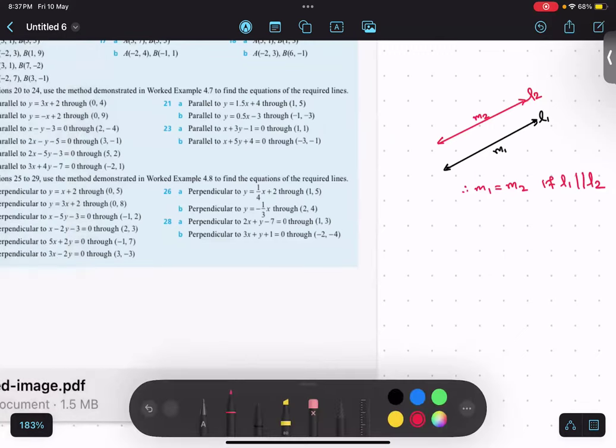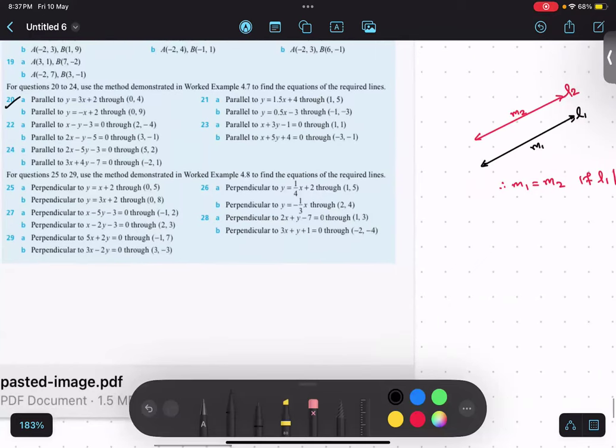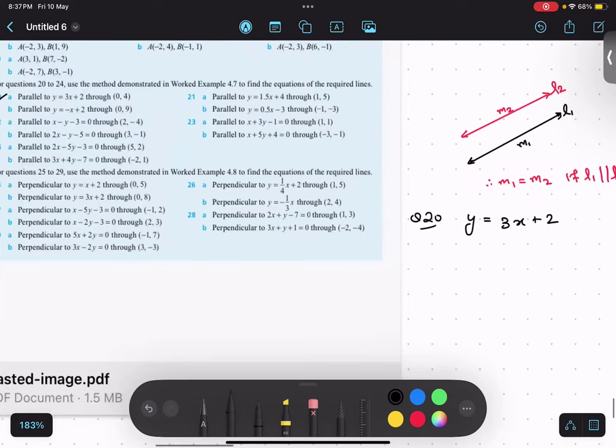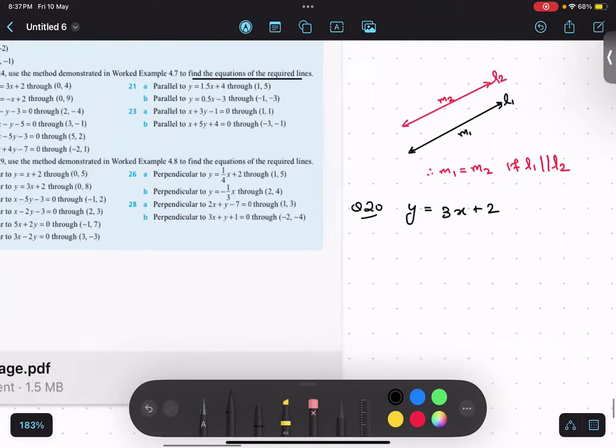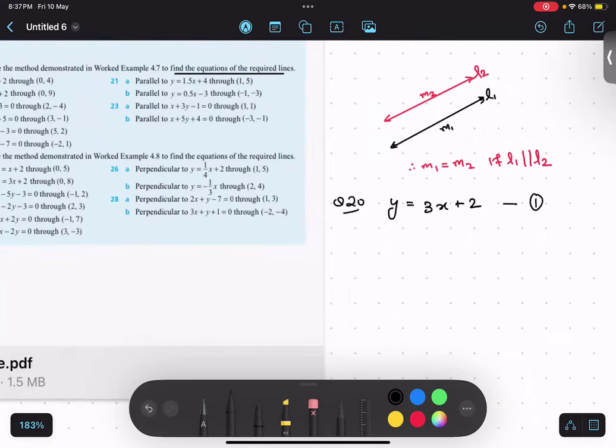Is this thing clear? Yes, sir. Now, question number 20 says there is a line 1 y equals 3x plus 2, and we need to find the equation of another line which is parallel to this. So this is our first line. Therefore, my m1 would be... what will be my m1 in this case? The 3. Yeah, be confident, 3. Because we are comparing it with y equals mx plus c. That means my m is 3. So m1 is 3.